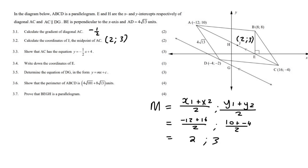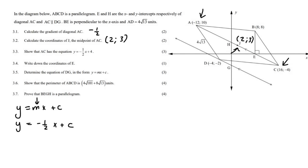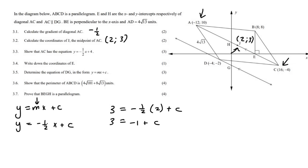Question 3.3: Show that AC has a certain equation. We know it's a straight line, so y equals mx plus c. We already worked out the gradient m as negative a half. To find c, plug in any point on the line. Using point (2, 3): 3 equals negative a half times 2 plus c, so 3 equals negative 1 plus c, giving c equal to 4.